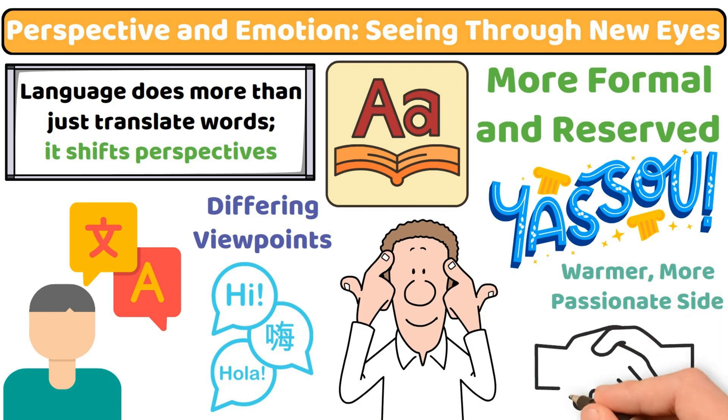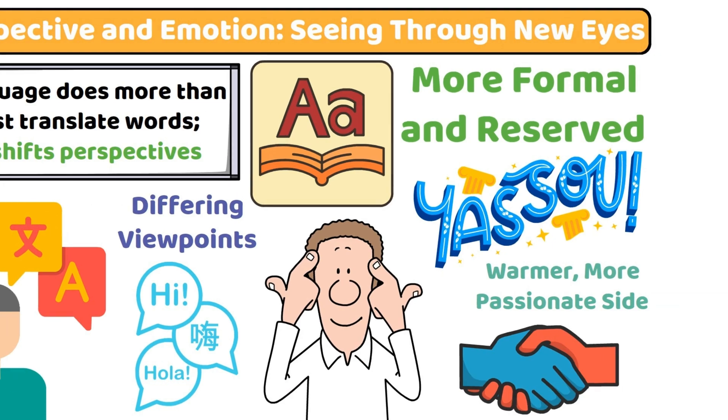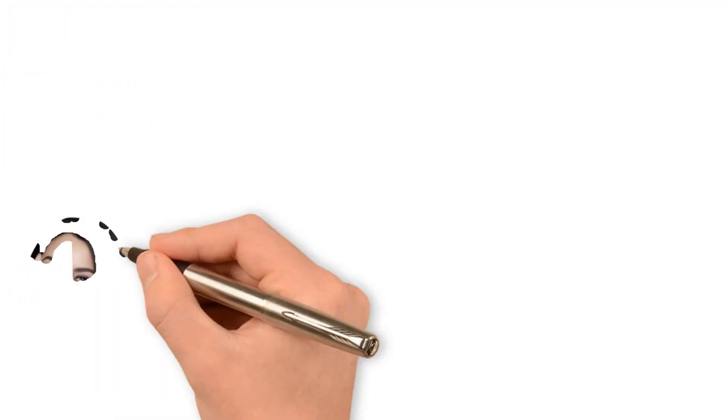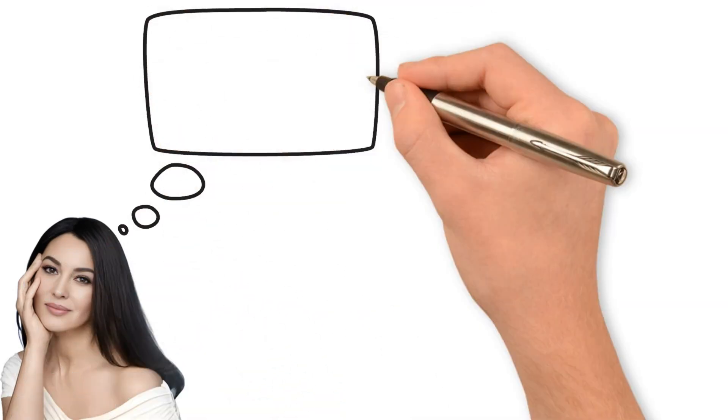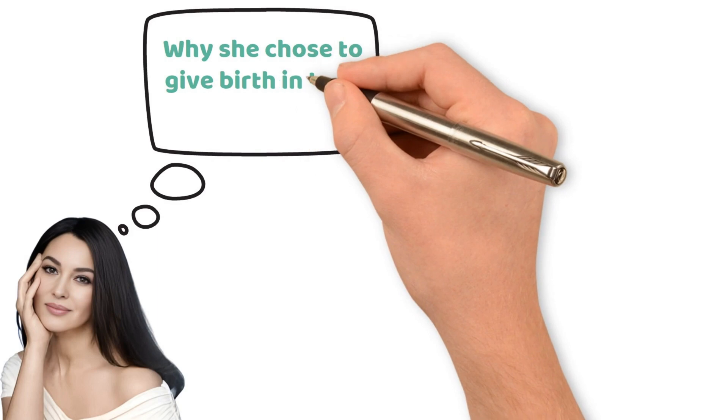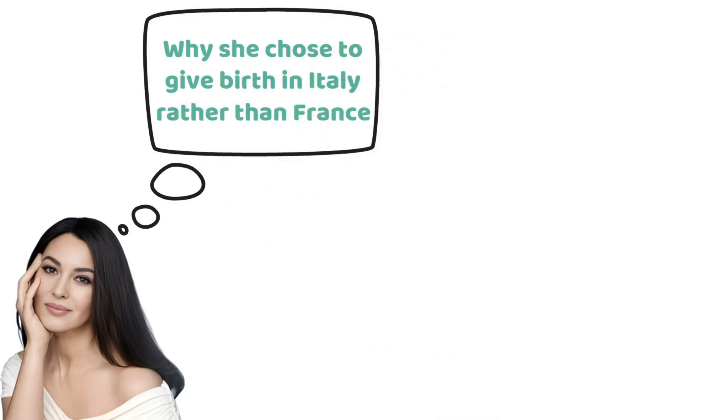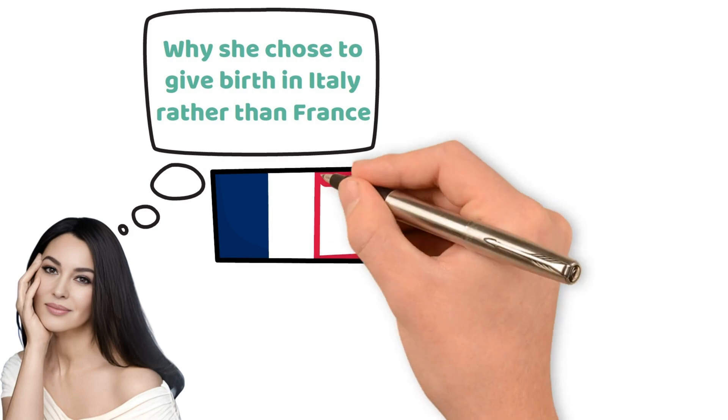These shifts reveal how language frames our emotional responses and can influence our personality traits, helping us better connect with diverse people and cultures. A great example of this is when several years ago, actress Monica Bellucci was asked why she chose to give birth in Italy rather than France, her long-time country of residence and home of her former husband.